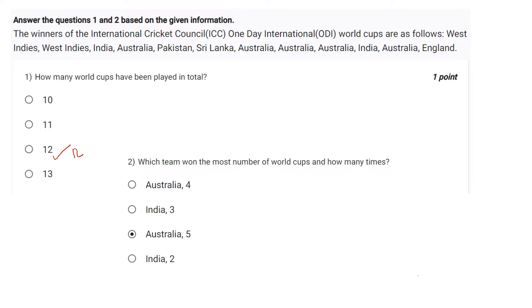Which team won the most number of World Cups and how many times? Let's see. West Indies is 2, India is 2. Then Australia 1, 2, 3, 4, 5. Australia 5, I think it is the maximum.